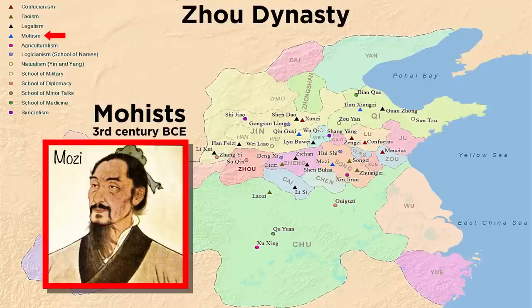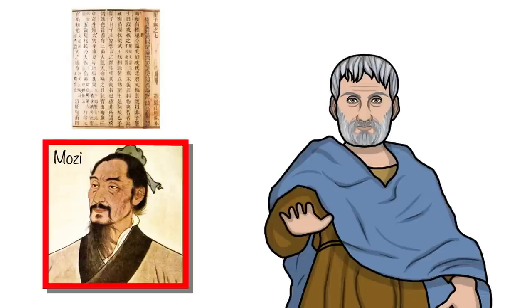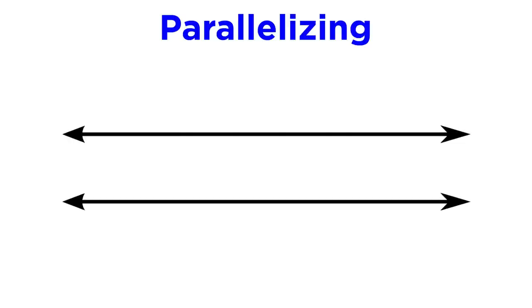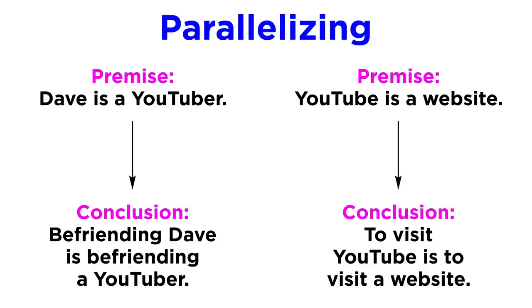This endeavor was only undertaken by the Moists some two centuries later. Although their surviving text fragments are limited, much has been extrapolated to compare their development with Aristotle and even more modern notions and concepts. One example is one of their techniques of disputation called parallelizing, which generated arguments resembling syllogisms — such as 'Dave is a YouTuber, befriending Dave is befriending a YouTuber.' To assert comparatively, more statements would be fashioned in the same shape, such as 'YouTube is a website, to visit YouTube is to visit a website.' Although simple, their logical format and its importance in evaluating an argument is evident, even though their focus was on the semantic aspect — its contents — more so than on the format itself.